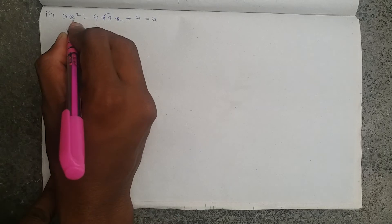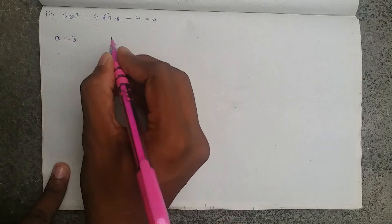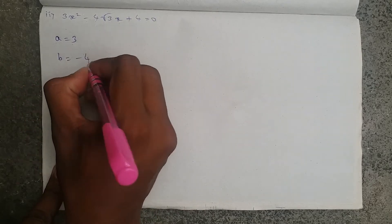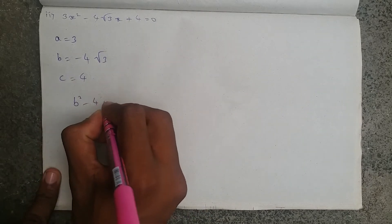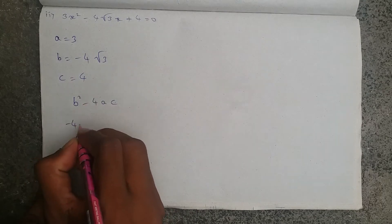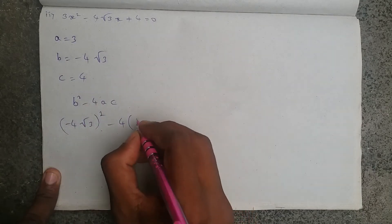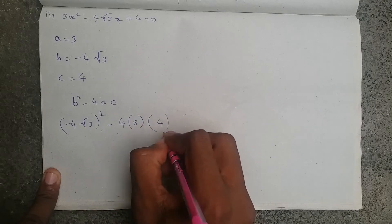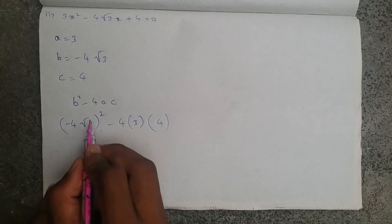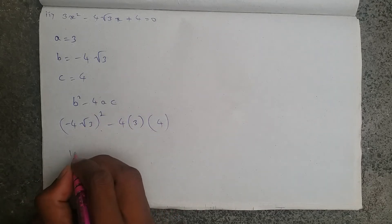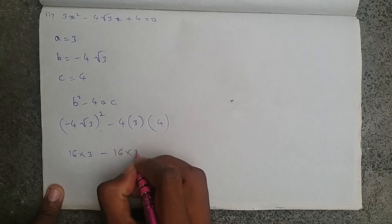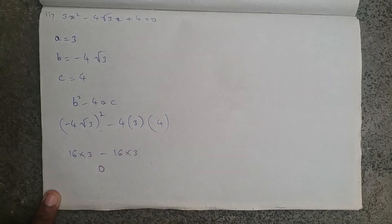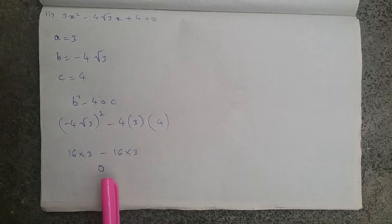The next question is 3x² - 4√3x + 4 = 0. The x² coefficient is 3, so a equals 3. The x coefficient is minus 4√3, so b equals minus 4√3. The constant c equals 4. Substituting b² - 4ac: minus 4√3 whole square, minus 4 into 3 into 4. That gives 16 times 3 minus 48, so b² - 4ac equals 0.